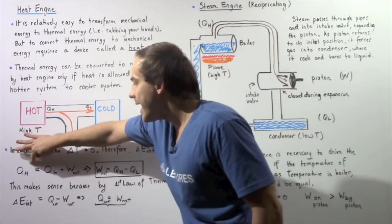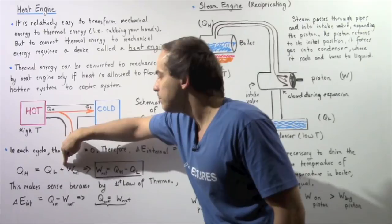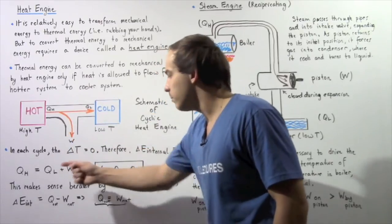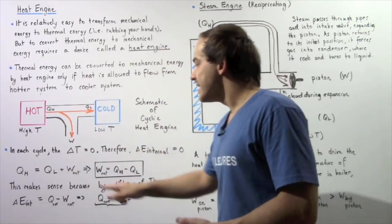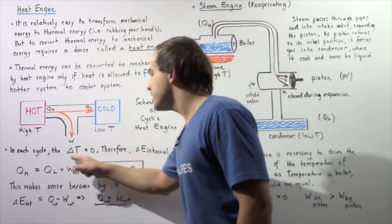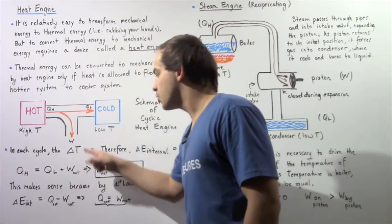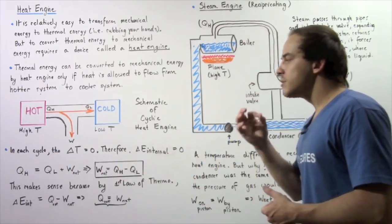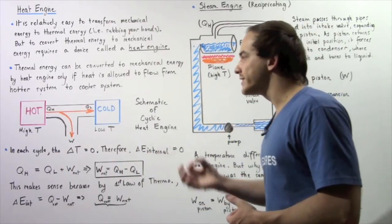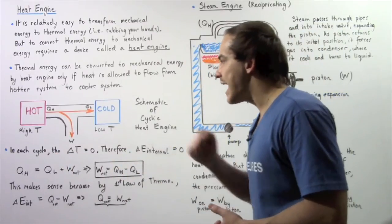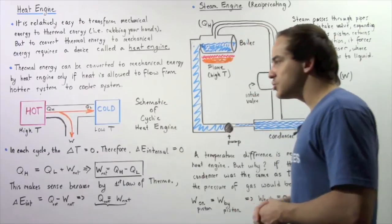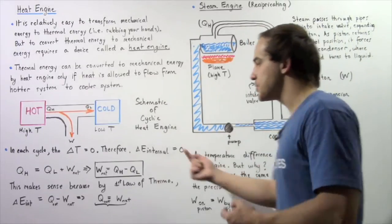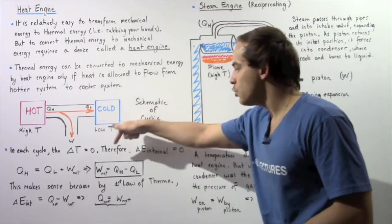The amount of energy that leaves the hot system equals the energy that flows into the cold system plus the work done by that system. So QH equals QL plus the net work W_net. Rearranging, the net work done by our heat engine equals the difference QH minus QL.